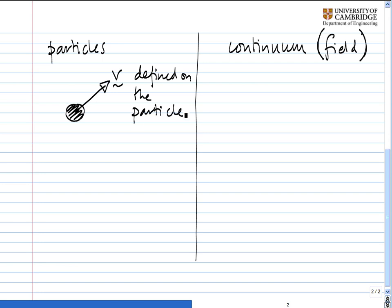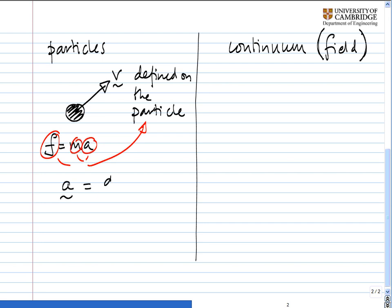If we wanted to look at how the particle accelerates and the forces on it, we might want to use F equals ma. The acceleration, the force, and the mass as well are all defined on the particle. And when we do that, we probably start by saying that the acceleration vector is equal to dv by dt, where v is the velocity vector. And note what we have here: ordinary derivatives.